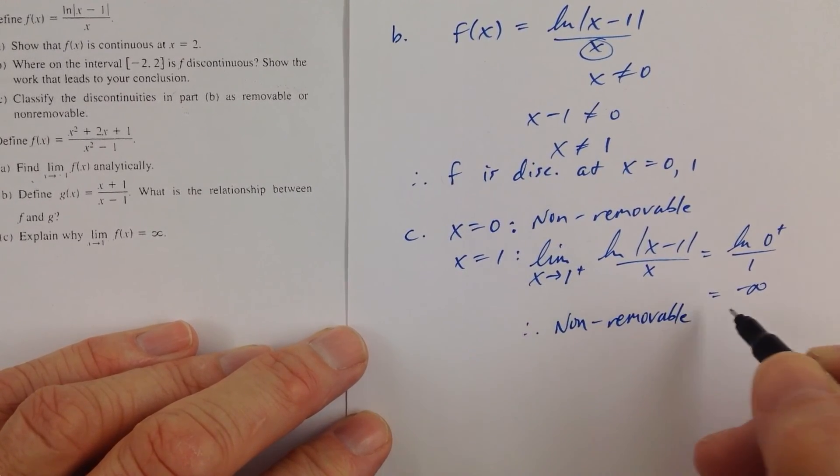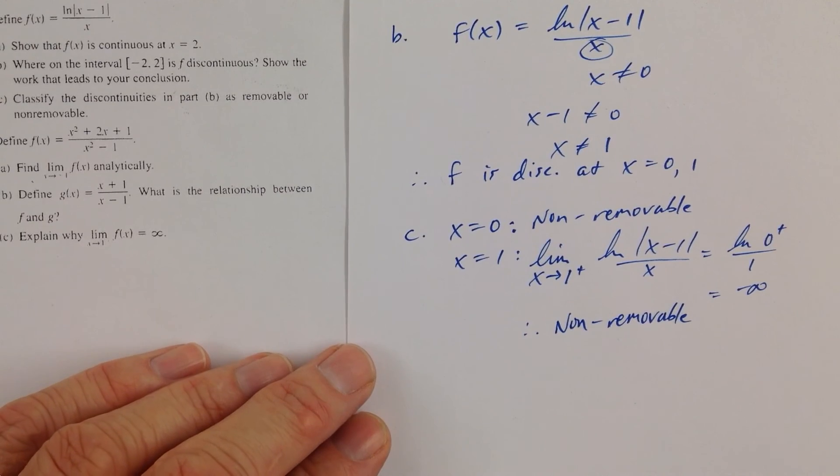I think this worksheet here is setting us up for problem number 7 being different than both of them being non-removable. But anyway, there you go. A, B, and C for number 6. Let's go on to number 7.